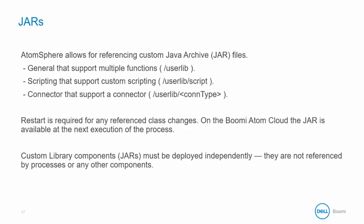There are three types of JARs. General JARs support multi-functions and are stored in the UserLib folder. Scripting JARs support custom scripting and are stored in UserLib/script. And finally, Connector JARs support a particular connector and are stored in UserLib slash whatever the connector type is named.